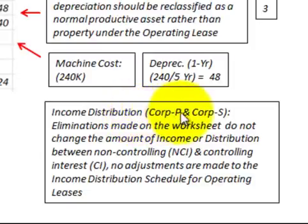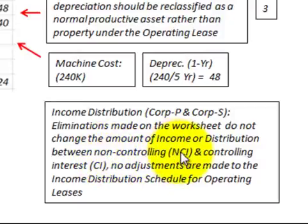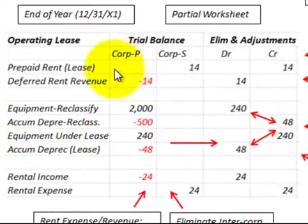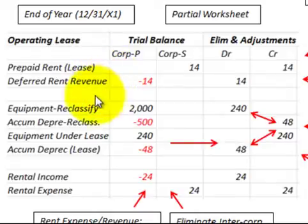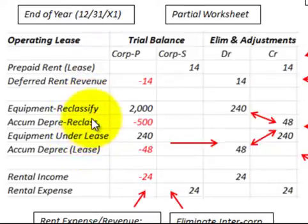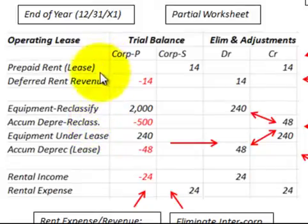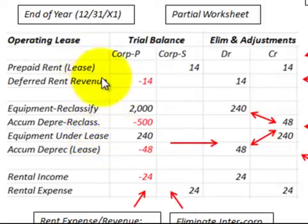For our income distribution for Corp P, the parent, and Corp S, the subsidiary for the consolidation — the eliminations made in this worksheet do not change the amount of income or distribution between the non-controlling interest (the subsidiary) and the controlling interest (the parent). No adjustments are made to the income distribution schedule for operating leases. These eliminations and adjustments do not affect the distribution of income for the parent and the subsidiary. That would have to be calculated with the full worksheet for all other adjustments, but for the operating lease, it doesn't affect the income distribution between the parent and the subsidiary.